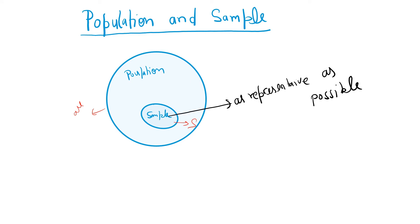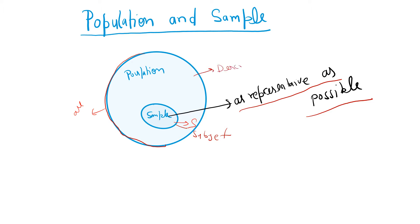Now, population and sample. Population is your whole data which we are going to study, and the sample is a subset of the population. The sample should be as representative as possible. Descriptive statistics is performed on the population, whereas inferential statistics is performed on the sample.